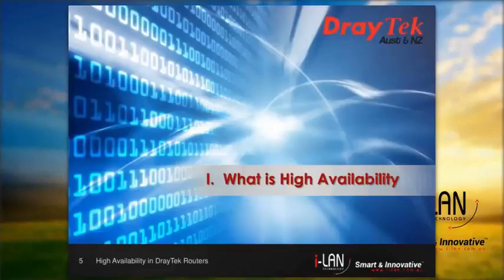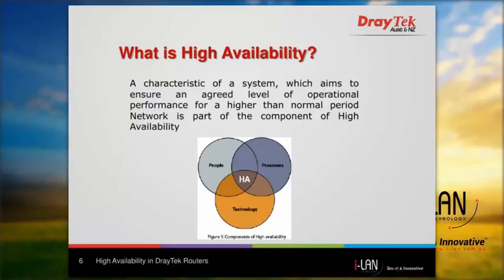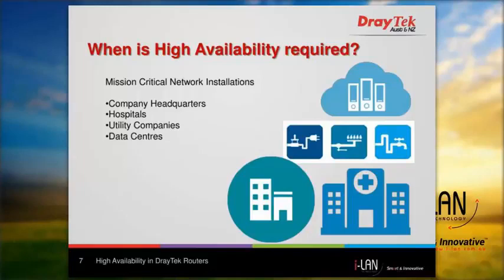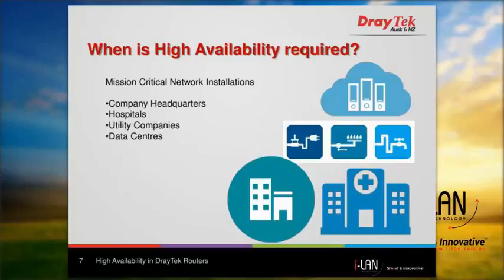The definition of High Availability is that characteristic of a system which aims to ensure a agreed level of operational performance for a higher than normal period. One point to consider is when is High Availability required. This is required in mission critical network installations where network service cannot be interrupted due to hardware failure. This can apply to companies' headquarters, hospitals, utility companies, data centers, and more. This is mainly due to modernization which has resulted in an increased reliance on the system.